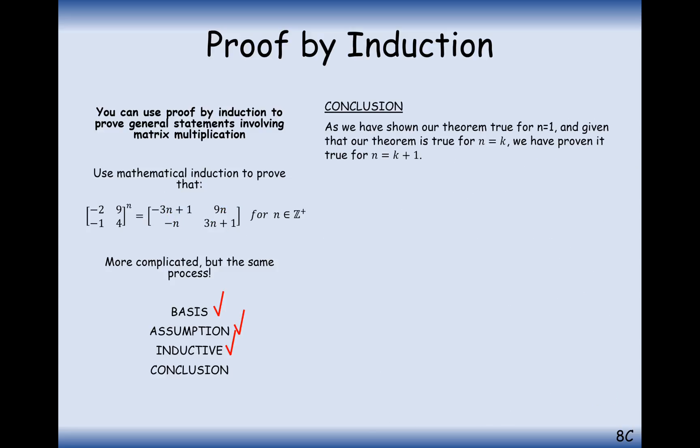Our conclusion: as we have proven our theorem true for n=1, and given that our theorem is true for n=k, we have proven our theorem true for n=k+1. Therefore by mathematical induction, our theorem is true for n in the positive integers. Always, always, always do this conclusion — you're not going to get full marks unless you have the conclusion. Yes, you are writing in English sentences. Get over it. Just do it.